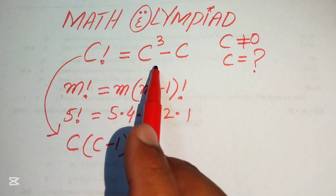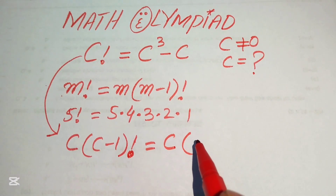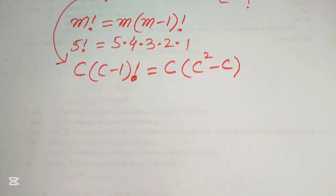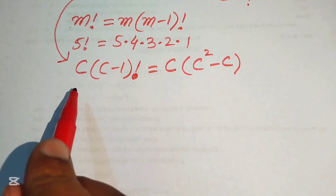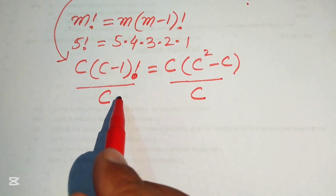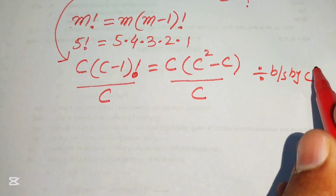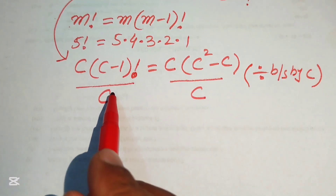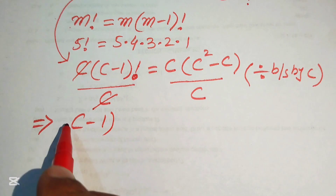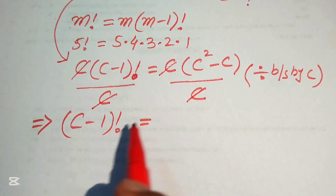Now we take c as a common factor on the right-hand side, writing it as c times (c squared minus c). Then we divide both sides by c, since c is a common term on both sides. The left side becomes (c minus 1) factorial after cancellation.